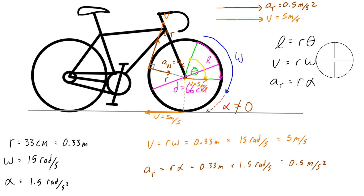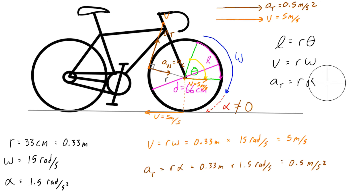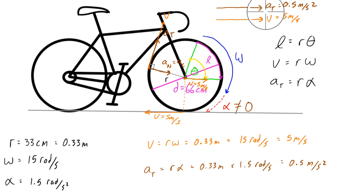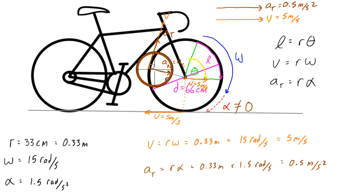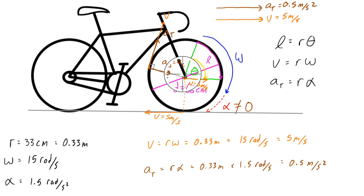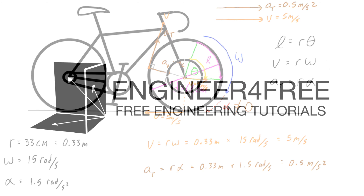Hopefully that clears up the differences between angular velocity and angular acceleration versus tangential velocity and tangential acceleration. Join me in the next video where we'll talk about the inward acceleration for circular motion problems that we call normal or centripetal acceleration.